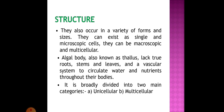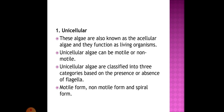Structure of algae: Algae occur in a variety of forms and sizes. They can exist as single microscopic cells or macroscopic and multicellular cells. The algal body is also known as thallus. They lack true roots, stems, and leaves, and a vascular system to circulate water and nutrients through their bodies. The structure of algae is broadly divided into unicellular and multicellular. Unicellular algae are also known as acellular algae. They can be motile or non-motile, classified into three categories: motile forms, non-motile forms, and spiral forms.